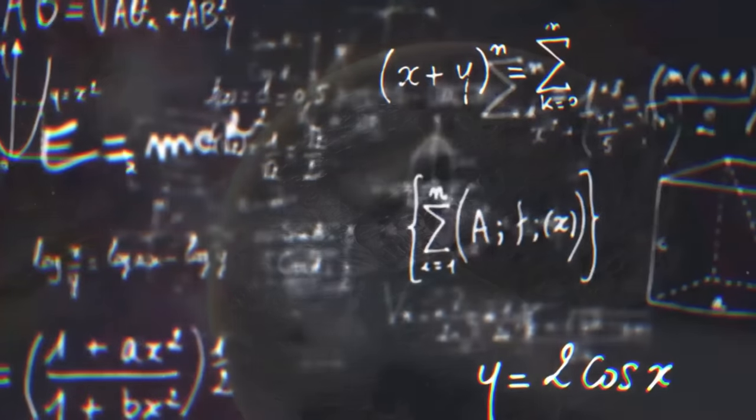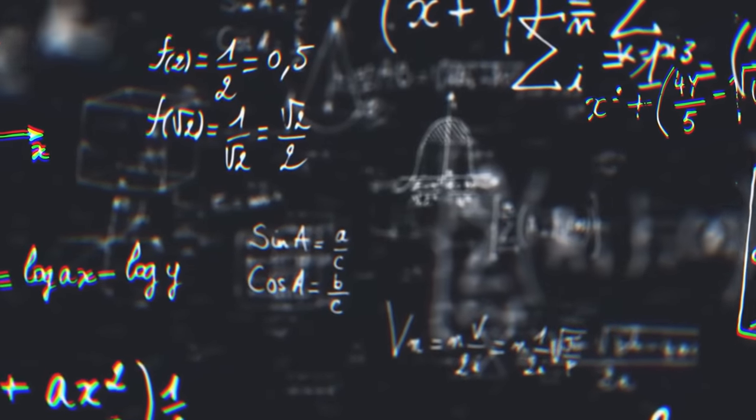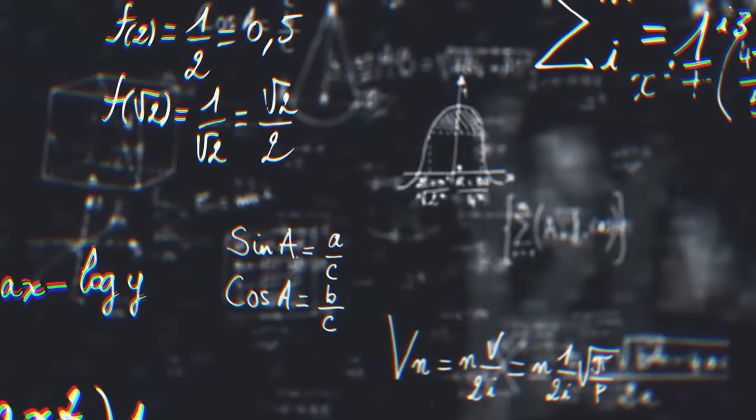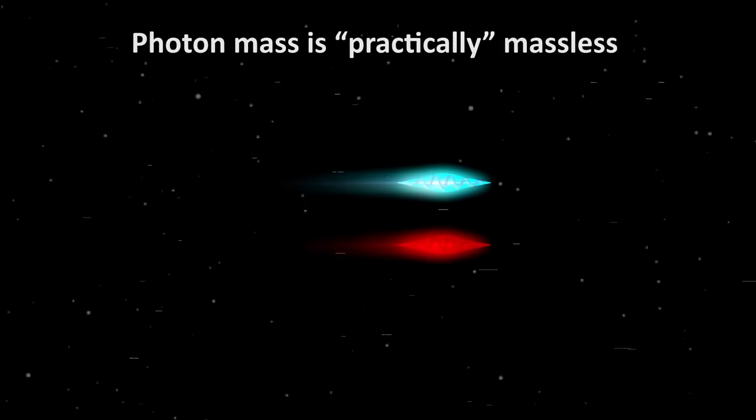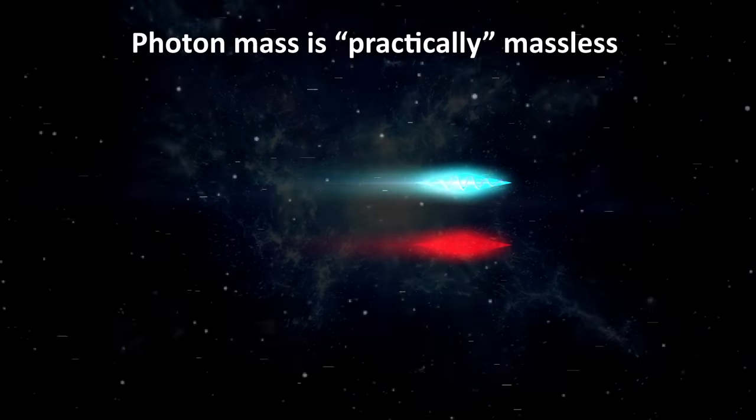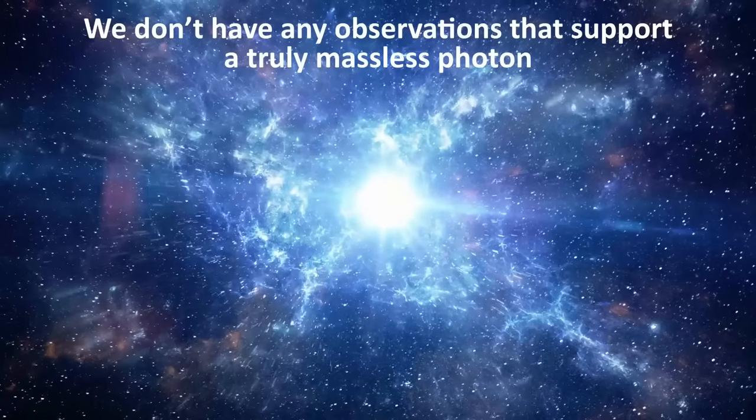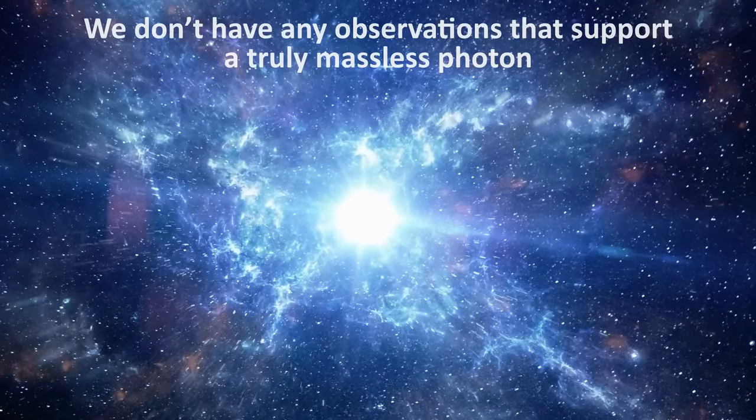So basically there is no big problem with continuing to use our current equations describing the universe, even with a massive photon. Because from our experiments and observations, its mass is predicted to be so small that it is practically massless. But the argument can be made that we don't have any observations that support a truly massless photon. So the possibility that it really does in fact have some mass, at this time cannot be excluded.